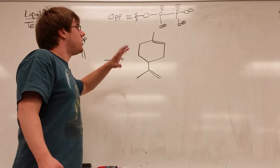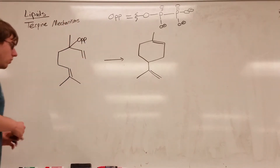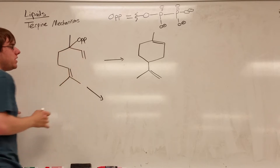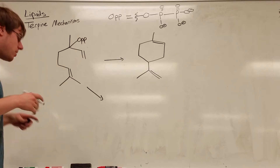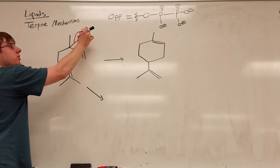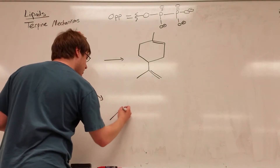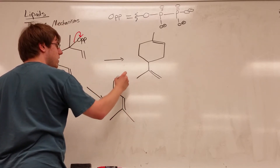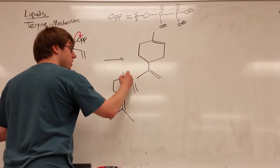What pyrophosphate does is it leaves, and it leaves behind a positive charge. When this leaving group pops off, it takes the bond's electrons from the carbon it was attached to, so that carbon ends up becoming positive. You would have the double bonds here unchanged, the carbons going around like that, and now you have a positive charge right on that tertiary carbon.